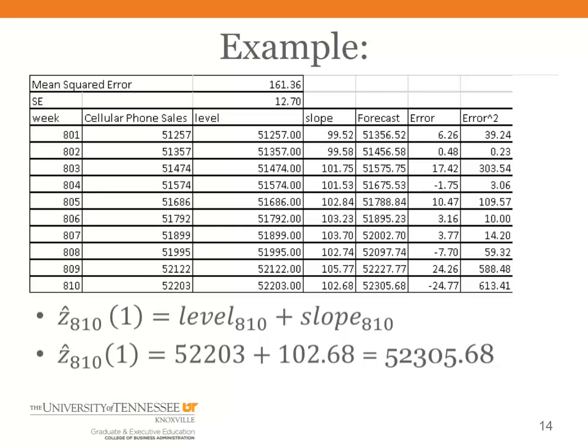it's just the level plus the slope. And the level is the most recently observed value. The slope is that exponentially smooth value that's showing there in the column labeled slope. You add those two together and you get a forecast for the next period.